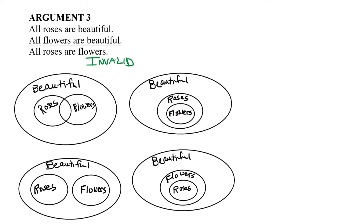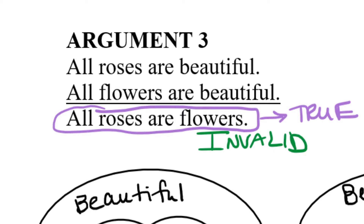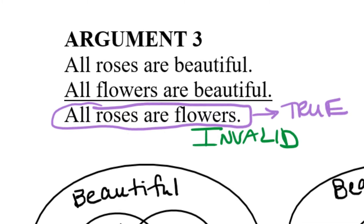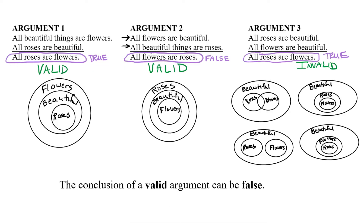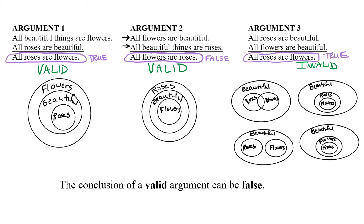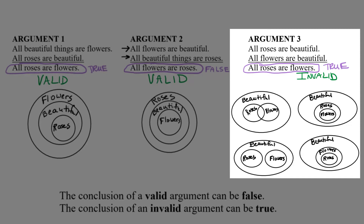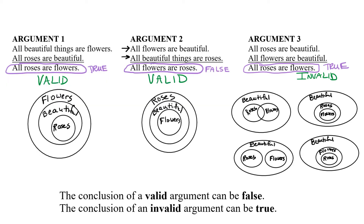This is despite the fact that 'all roses are flowers' is, as humans who live on earth, a true statement. So even though the conclusion was true, the reasoning used to reach it was not valid. We've seen that a valid argument can yield a false conclusion when the premises are flawed, and that an invalid argument can yield a true conclusion despite poor reasoning. I hope you found this video helpful — if you did, please give it a thumbs up, as that will help other students find the video.